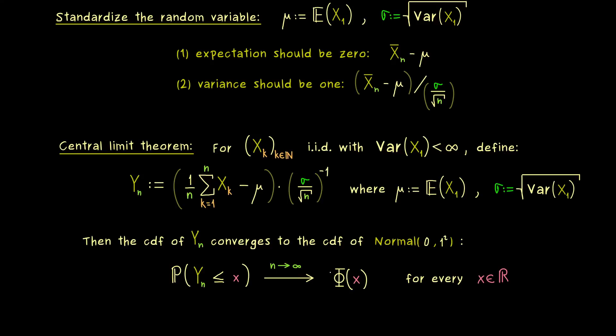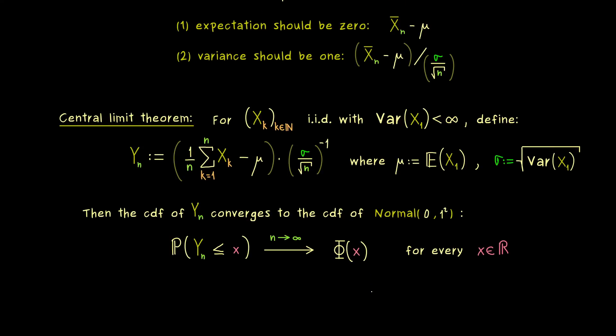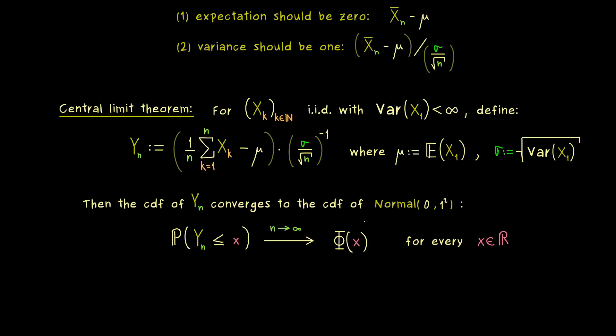And it converges to capital phi of x which is the CDF of this normal distribution. And the formula for this CDF we know because we know the probability density function of the normal distribution. Which means capital phi is simply given as an integral over this density function. More precisely we have to go from minus infinity to x. And inside we find the exponential function to the power minus one half t squared. And that's it. This is the whole integral.